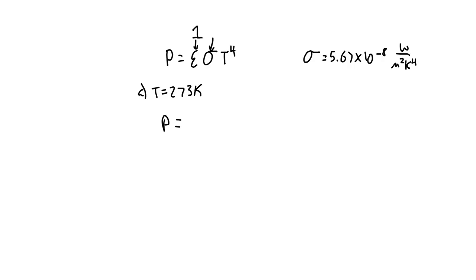So our power here is going to be one, which I'll just drop, times sigma, times our temperature, which in this case is 273. This does need to be in Kelvin, and that's going to be to the fourth.